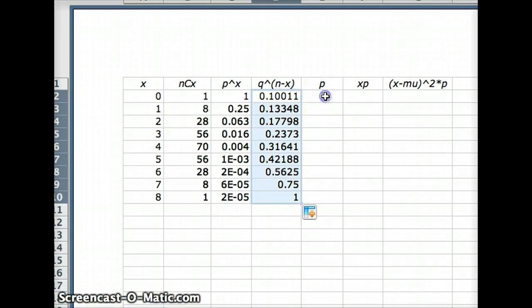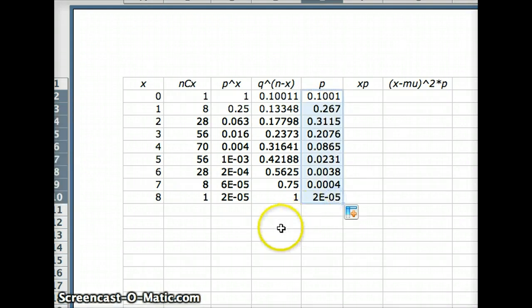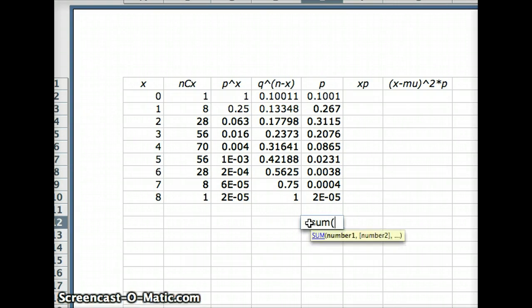Now to get the probability, we've got to multiply n choose x, p to the x, q to the n minus x. So that's going to require me to do equals product of those three things. And we get those values, that's our probability. If we add all those up, we want to see what the total probabilities are. Of course, the probability should sum to one. Let's make sure that's the case. And indeed, we see that they do.